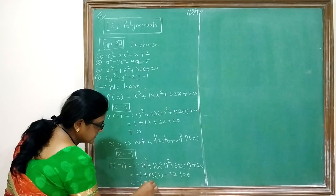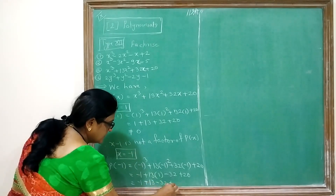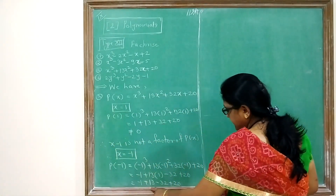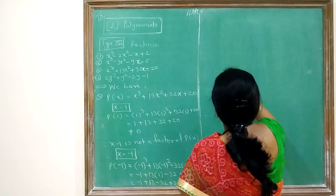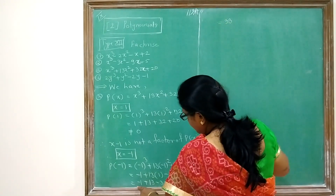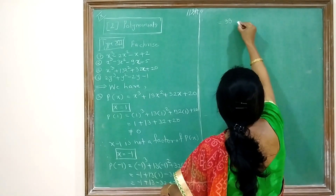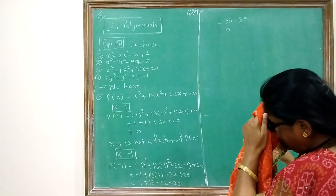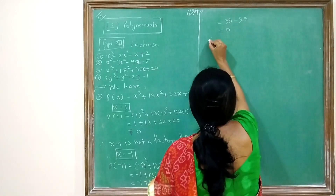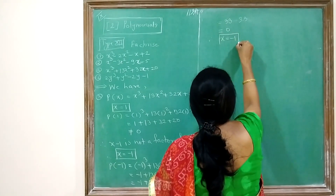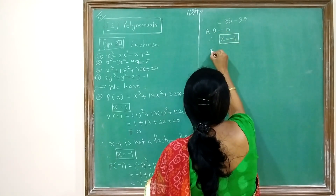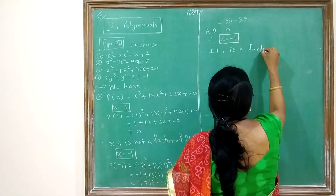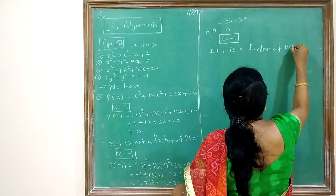Here −1 + 13 − 32 + 20: we get +13 + 20 = 33 and −1 − 32 = −33, so the result is 0. Since P(−1) = 0, x + 1 is a factor of P(x).